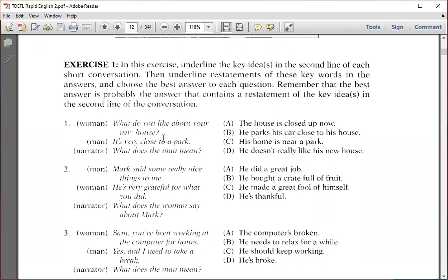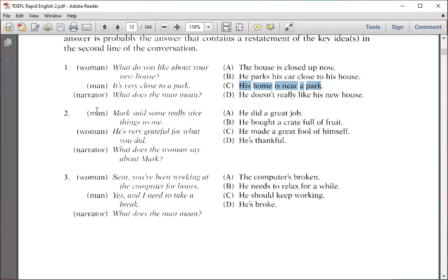Now let's find this in an exercise. "What do you like about your new house?" "It's very close to the park." What does the man mean? The keyword is 'very close to the park.' The correct answer is: The house is near a park, because 'close to the park' is the same as 'near the park.'